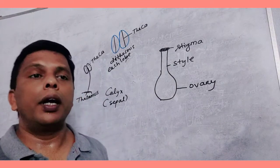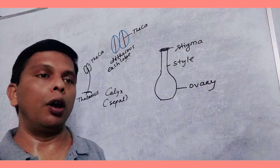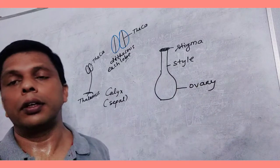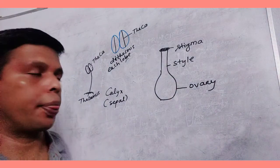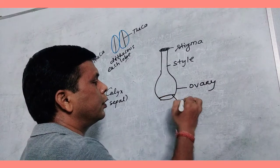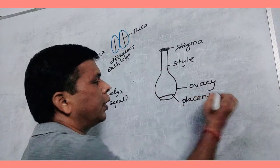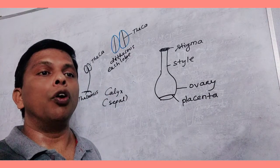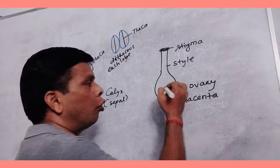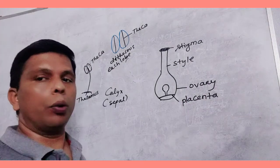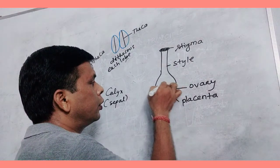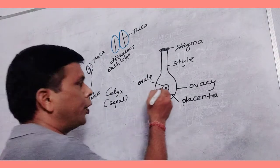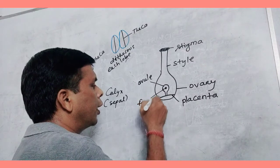The female reproductive part is complex among all the parts. The individual unit of gynoecium is carpel. There is a placenta, this is called placenta. Above the placenta, there is ovule. Within the ovule, there is female gamete.